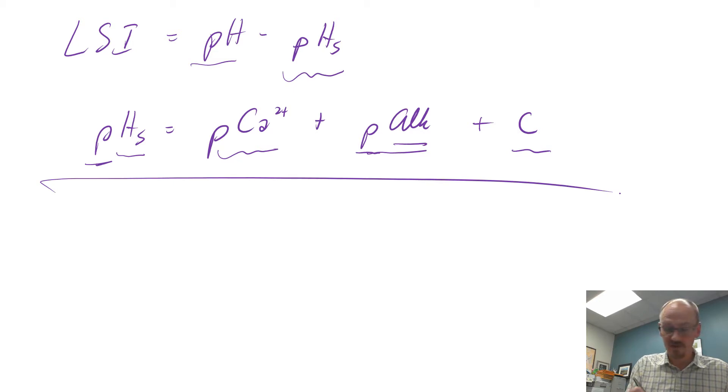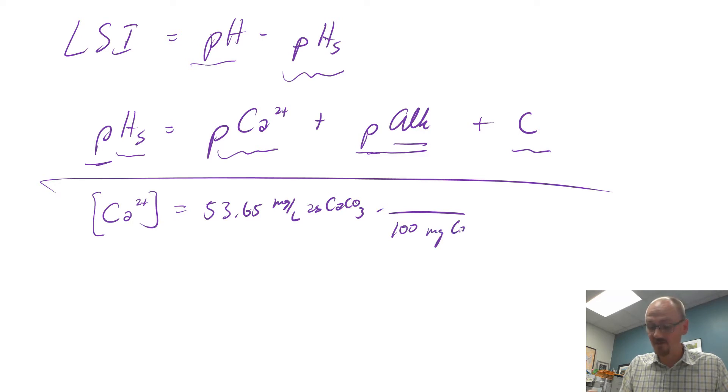Let's work on first the calcium ion concentration in molar units. We were told that we have 53.65 milligrams per liter as CaCO3 of calcium. We need to convert using the molecular weight of calcium carbonate, being 100 milligrams per millimole of CaCO3. Then we work in molar units, not millimolar units, so we divide by 1000 millimole per one mole. With that, we get 5.37 times 10 to the negative fourth moles per liter of calcium.